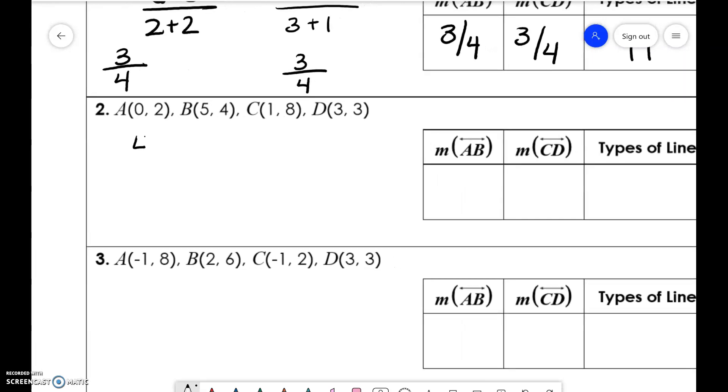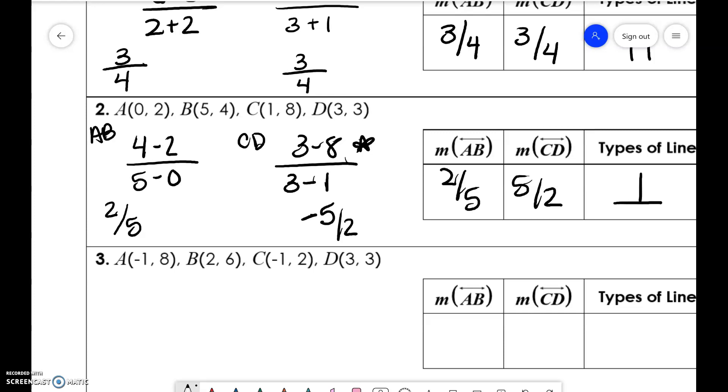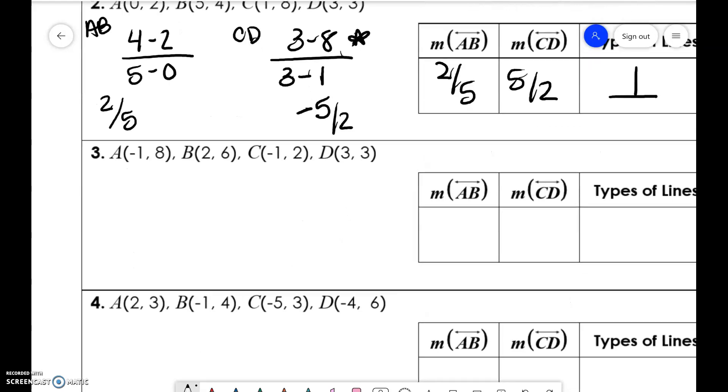Number two, we have 4 minus 2 for AB over 5 minus 0, so that's 2 over 5. For CD, we have 3 minus 8 and 3 minus 1, so 3 minus 8 is 5 and 3 minus 2 is 2. So we have 2 over 5 and 5 over 2. This is a negative reciprocal, however, we do not have a change of sign. I'm sorry, up here I messed up, it should be negative 5. So we do have a change of sign, so those are perpendicular.